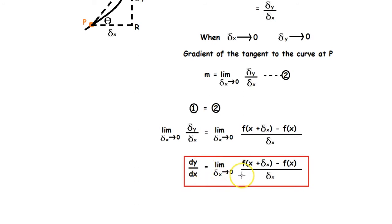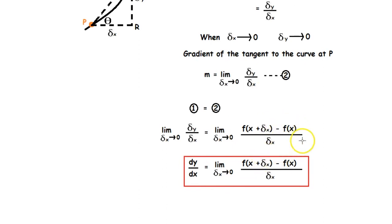Differentiation is basically the gradient of a tangent at a point on a curve. Now that you know how limits and differentiation are connected to each other, in our next video we will learn how to find the derivatives of functions using the first principles. Until next time, take care.